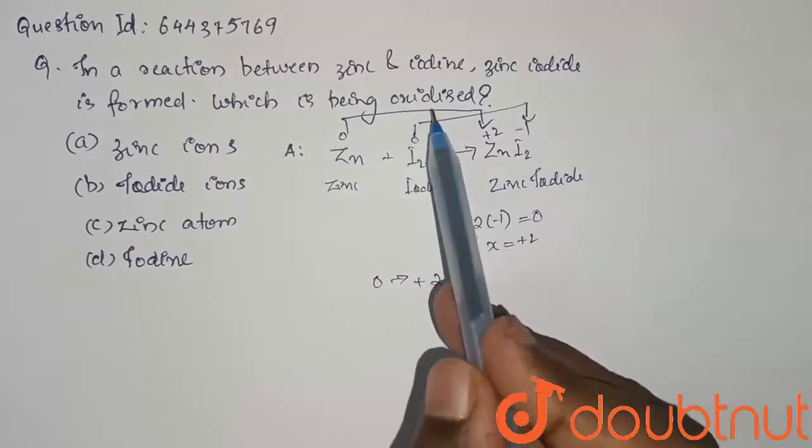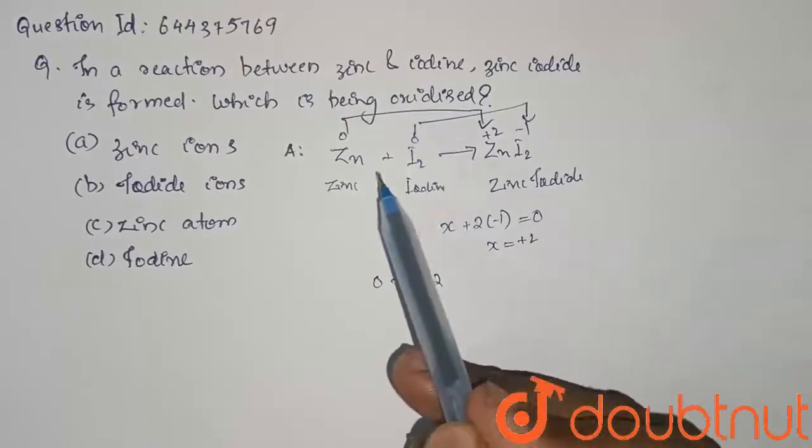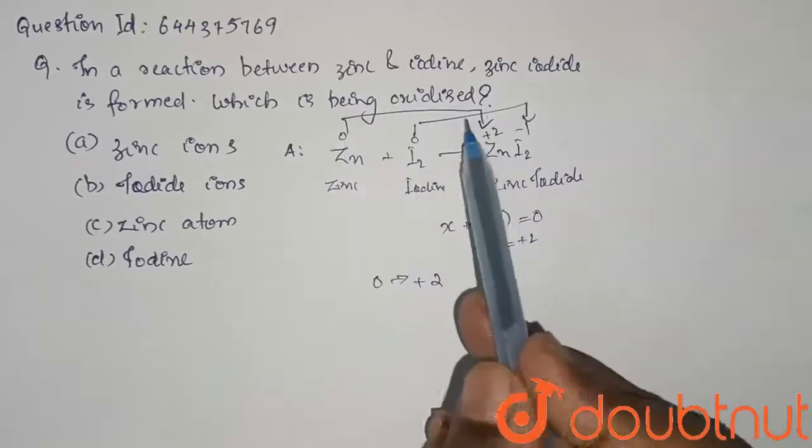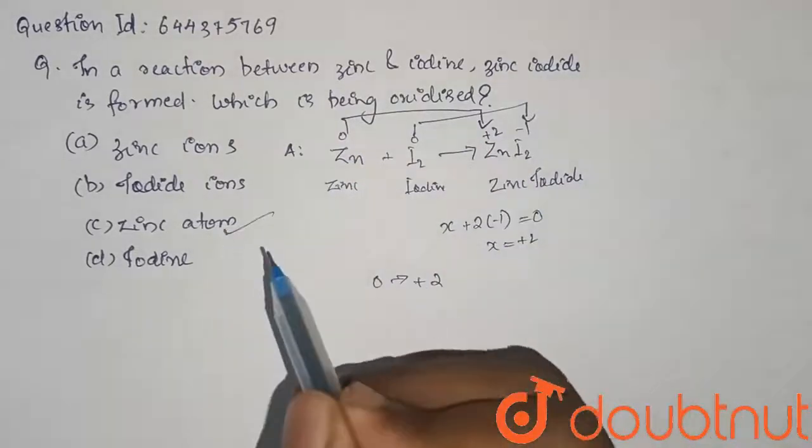So if somebody doesn't know, oxidized means the element is losing electrons or gaining in oxidation number. So here, a gain in oxidation number from 0 to plus 2 is happening. So the answer is zinc atom. Thank you.